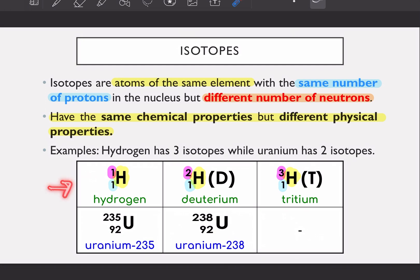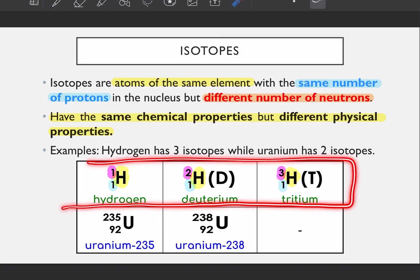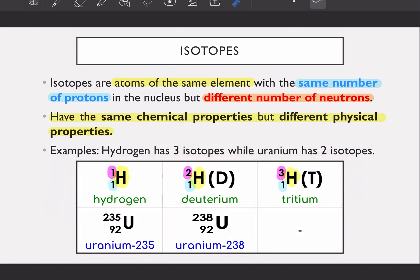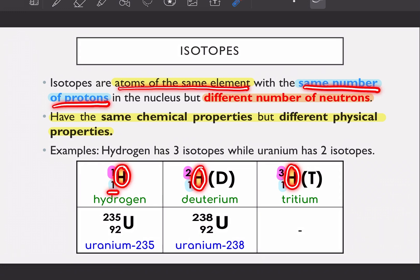If you look here, this top part is hydrogen isotopes. Ada tiga isotopes untuk hydrogen. So maksudnya atoms of the same element where we have hydrogen, hydrogen and hydrogen, with the same number of protons. Proton kat mana? Bottom left kan? So ni number of proton ni satu, satu, satu. So that's the same number.